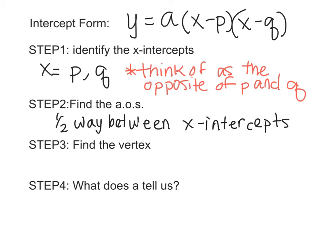Once we know the axis of symmetry we know we can find our vertex and remember our vertex is an ordered pair where the x value is the axis of symmetry and the y value here that we're going to plug in for.